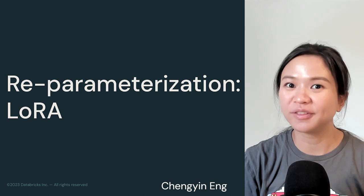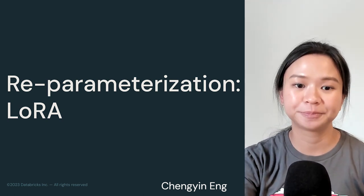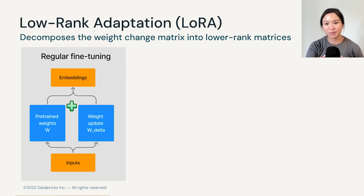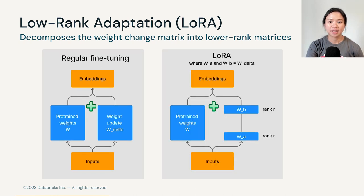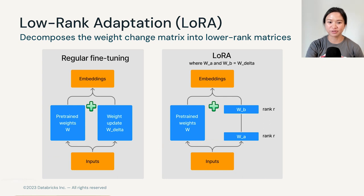We'll cover a small amount of linear algebra to dissect what low-rank representations mean. In fine-tuning or any general model training scenario, we update the model weights as we go through forward and also backward paths. The idea behind LoRA is that we can decompose the weight delta matrix into two low-rank matrices. Before we can answer what difference that makes, let's briefly revisit linear algebra basics to understand what matrix rank is.